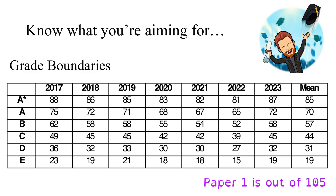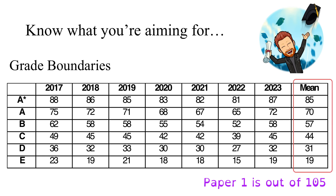Before having an in-depth look at the number of marks available for each topic, it's really important to put that into context. You will obviously have a goal in mind in terms of the grade you're aiming for, so what I'm displaying here are the grade boundaries needed to achieve each grade over time. The first paper for the current syllabus was in 2017, and we've moved through to 2023. On average across those seven papers, to get an A* required 85 marks out of 105, and 70 out of 105 to get an A.